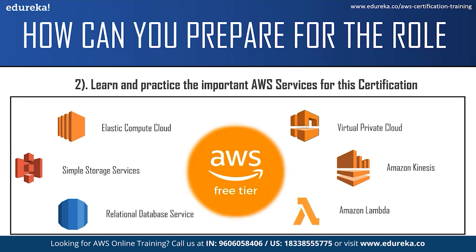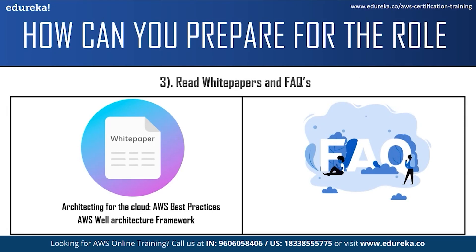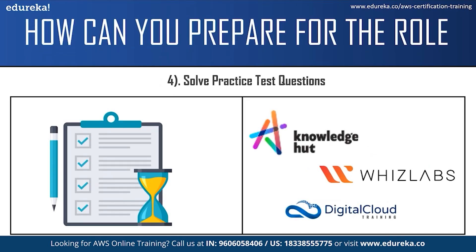The AWS Free Tier account allows you to access over 85 AWS services for free — just submit the required information and you can start practicing 85 plus services at no cost. The next step is referring to white papers and frequently asked questions. White papers provide technical knowledge about various AWS concepts and services. Two of the best white papers are Architecting for the Cloud: AWS Best Practices and the AWS Well-Architected Framework. The FAQs will help you clear doubts about the certification. You should also solve practice test questions from websites such as Whizlabs, A Cloud Guru, and Digital Cloud Training.